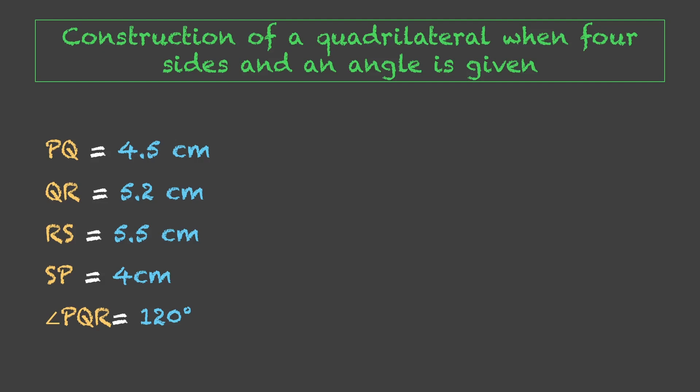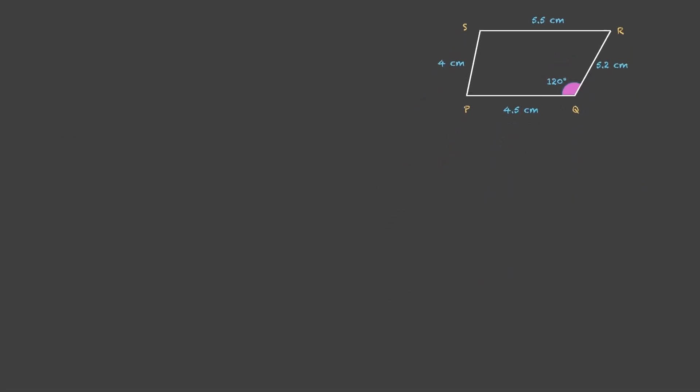The very first question is which side to pick? Can we randomly pick any side? Actually, no, especially when an angle is given. We'll come to it in a little while. So over here, let us pick PQ for now and draw 4.5 cm line which is PQ. Angle Q is given to us which is 120 degrees. So we'll make Q 120 degrees here. Then we have QR of 5.2, RS of 5.5 and SP of 4 cm. So this is how our rough sketch looks like. Let us keep it to one side for reference.